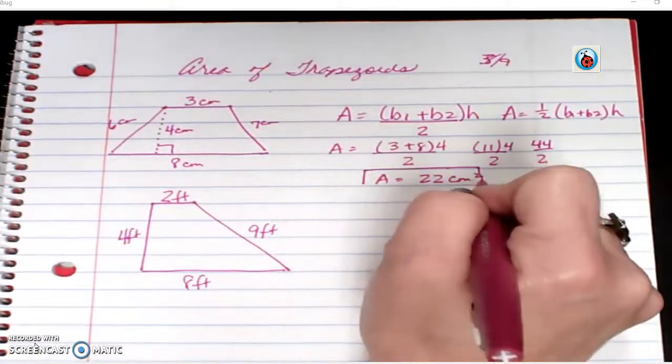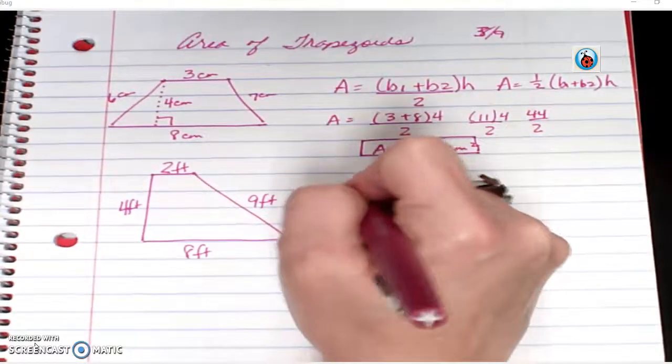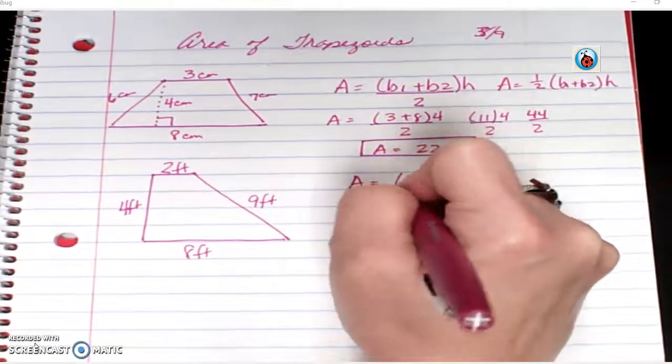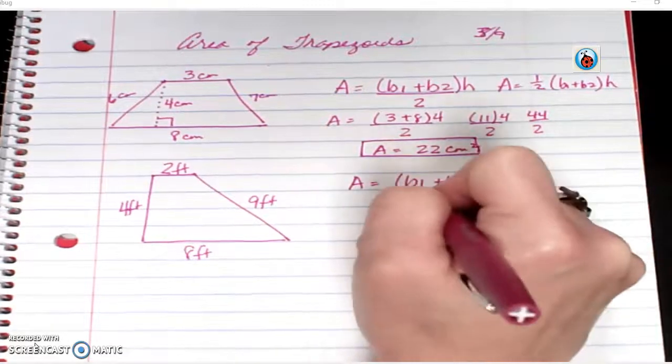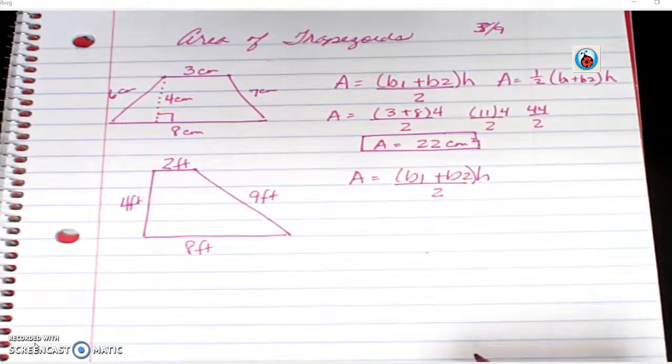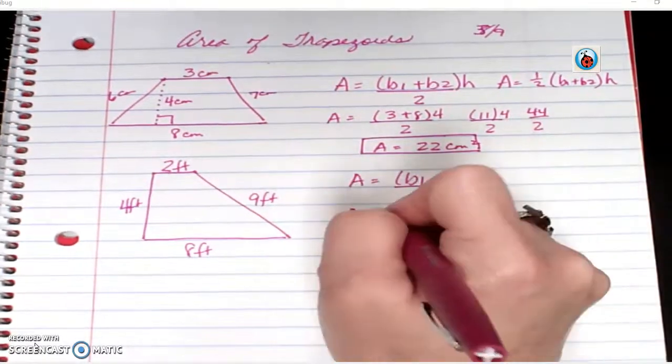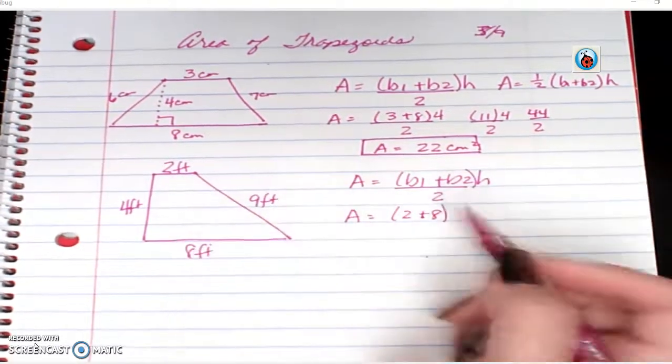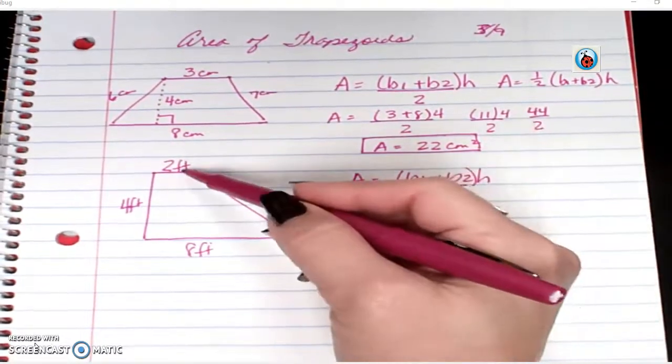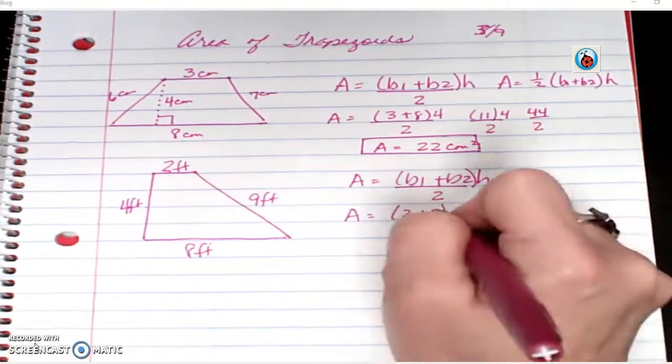So, let's do another one. If our trapezoid looked like this, we would still write base 1 plus base 2 times height divided by 2. So the area is base 1, 2, plus base 2 is 8 because these are my two parallel sides. How far is it from 2 to 8? It's 4 feet. That means the 4 has to be my height.